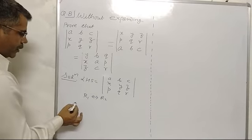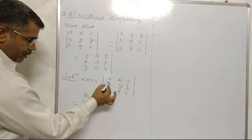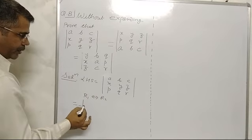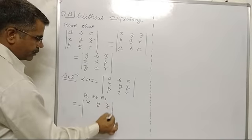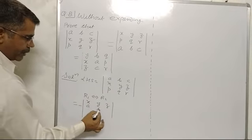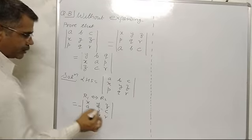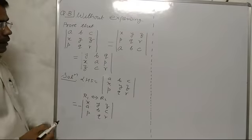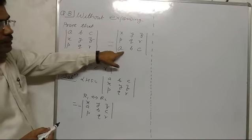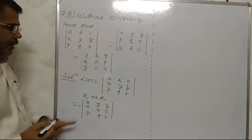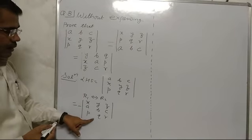We know that if we interchange R1 and R2, we apply a minus sign. So we get minus times the determinant with rows X, Y, Z; A, B, C; P, Q, R. Again, A, B, C is required in the third row.